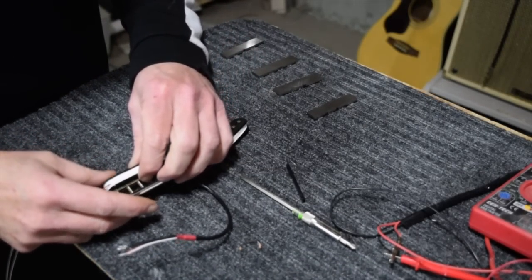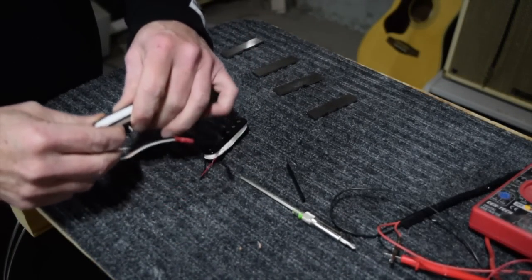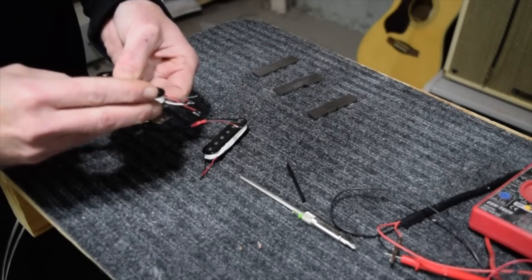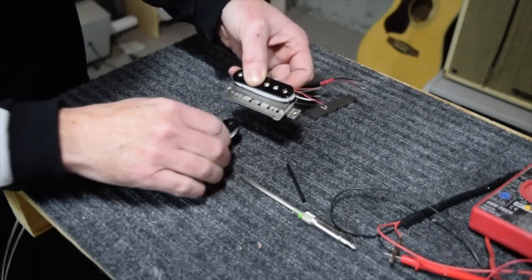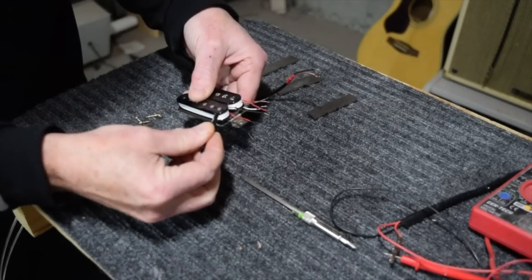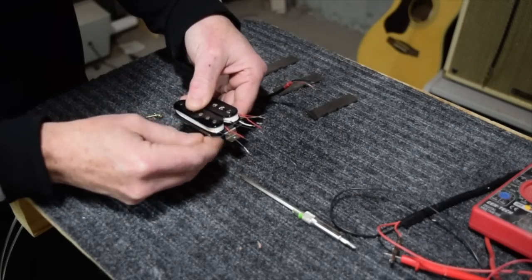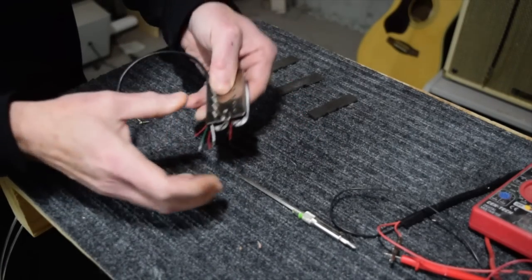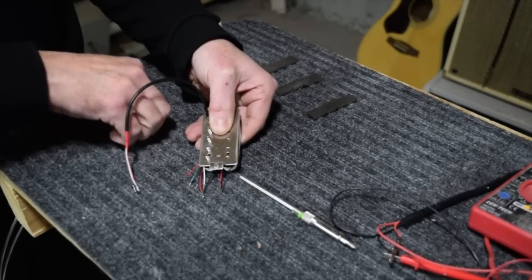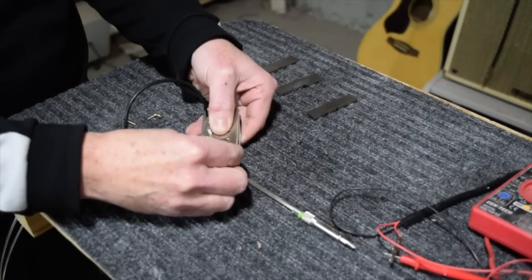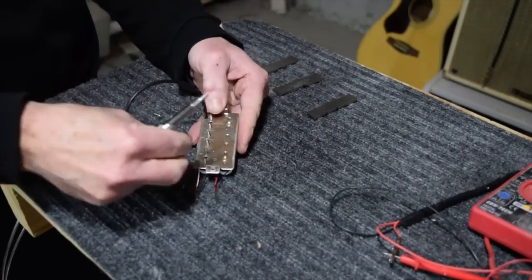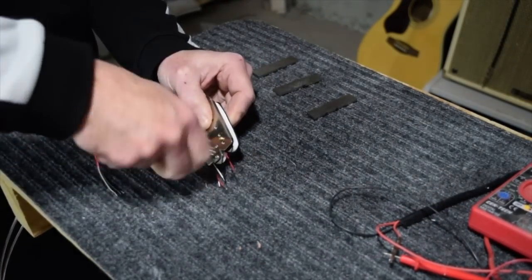Now I'm ready for the final assembly of the pickups, and that means installing the bobbins with the magnets. And the way I do this is I always have the screw bobbins are my south pole orientation, and that means that the south pole will always be either against the fretboard or against the bridge. And then the bobbins are installed just by using those tiny little brass screws.